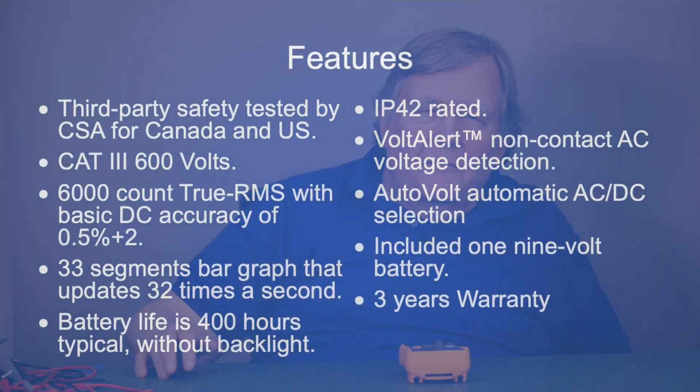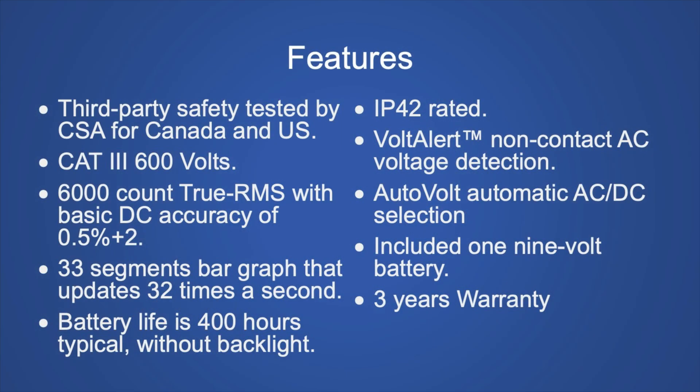Let's talk about the features of this meter. This is third-party safety tested by CSA for Canada and the US. It's a CAT3 600 volt meter. It's a 6000 count true RMS with a basic accuracy of 0.5% plus 2. It's got a 33 segment bar graph that updates 32 times a second. It is a claimed battery life of 4000 hours if you don't use the backlight. It's IP42 rated which gives you a little bit of dust and moisture protection. It has Volt Alert which is the non-contact AC voltage detection. It has Auto Volt which will measure automatically AC or DC. It includes a 9 volt battery and it has a 3-year warranty.